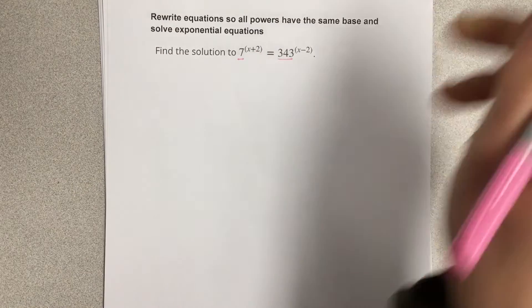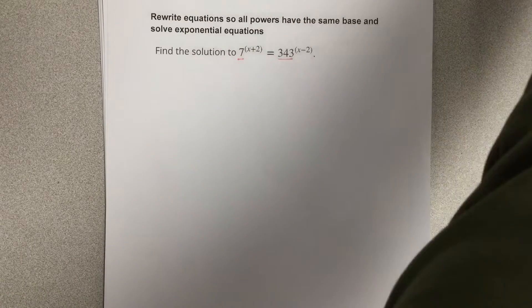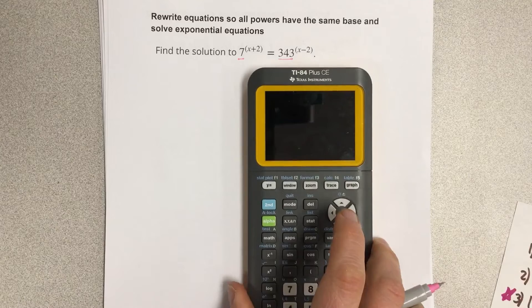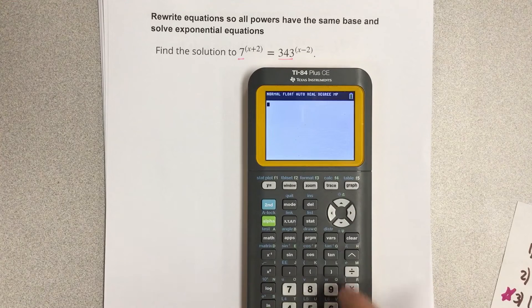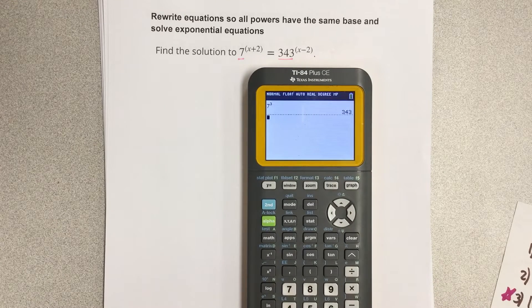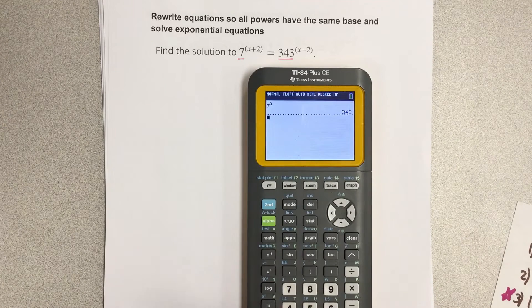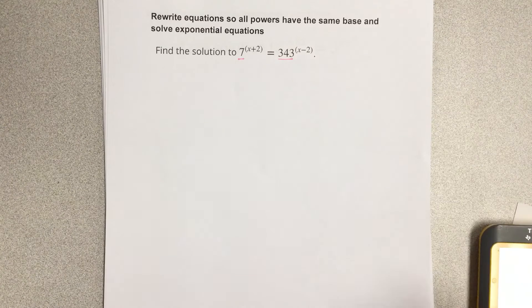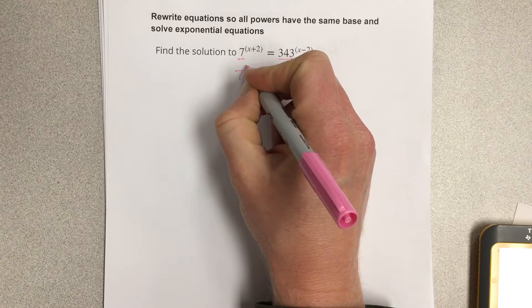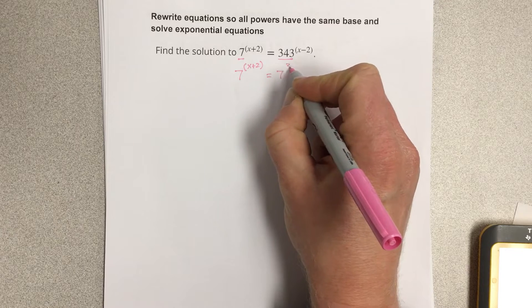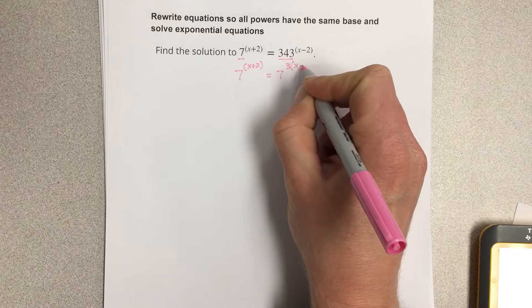Well I know that 343 is really just 7 cubed. So I can write that as 7 to the third power, so it would be 7^(x+2) = (7^3)^(x-2).